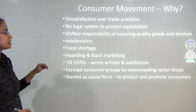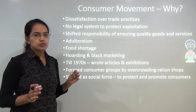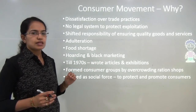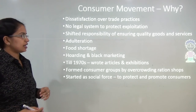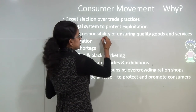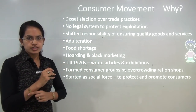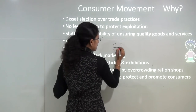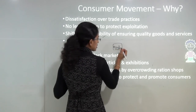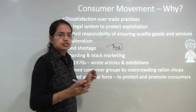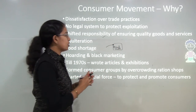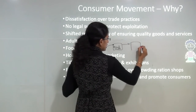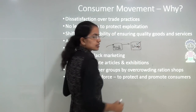There should be a legal system to protect consumers against illegal trade practices. Till the 1950s, there was no legal system that protected consumers in the market. There is also a shift in responsibility to ensure the quality of goods and services. For example, if I am buying a pack of Amul milk from a shop and the pouch is rotten or not in perfect form, I would tell the shopkeeper — but is he the right person to address the issue?